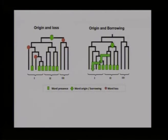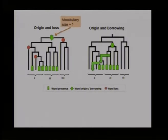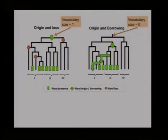The main difference between these two scenarios is the vocabulary size of the common ancestor. In the origin-and-loss scenario the common ancestor has a vocabulary size of one for that cognate; in the borrowing scenario it has a vocabulary size of zero. Inferring borrowing events rather than origin-and-loss thus affects how large the ancestral vocabulary was. The key insight is that the proportion of borrowing we allow determines the inferred vocabulary size of ancestral languages.